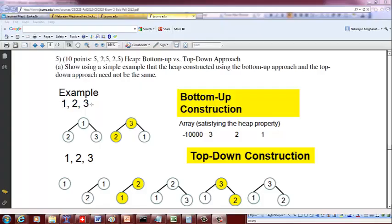Let's say you're given a list of elements 1, 2, 3. If you want to do a bottom-up approach, you write it down as a binary tree first. Then you check for each of the leaf nodes whether they satisfy the heap property. This node does not satisfy the heap property.